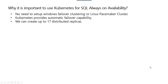Why is it important to use Kubernetes for SQL Always-On availability? First, we don't have to set up Windows failover clustering in a Windows environment, or if you are setting up in a Linux environment, you don't have to set up a Linux Pacemaker cluster - that simplifies our deployment. Another capability is that Kubernetes is an orchestration engine providing automatic failover capability, so you don't have to worry about how failover will happen in a non-Kubernetes environment. And finally, you can spin up 17 distributed replicas, which is a large number.